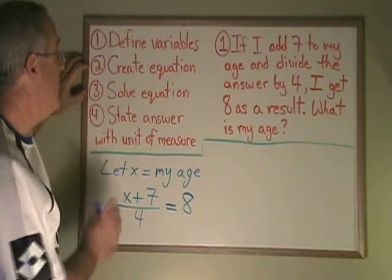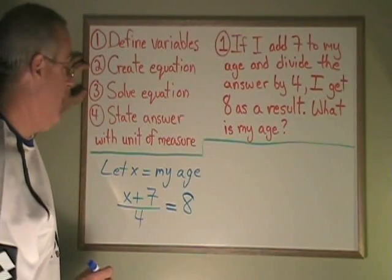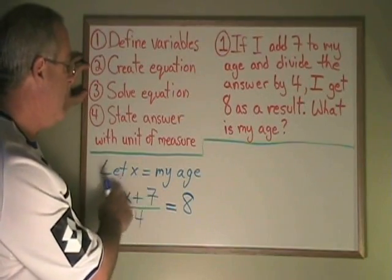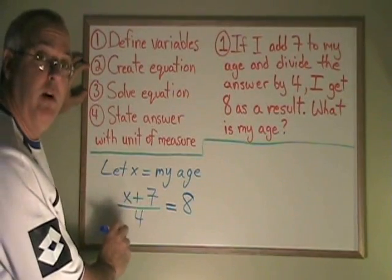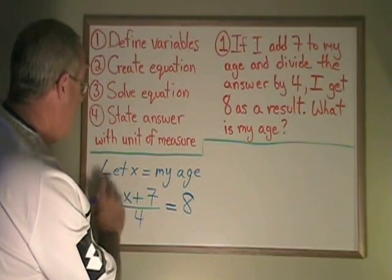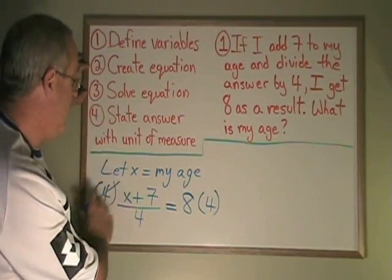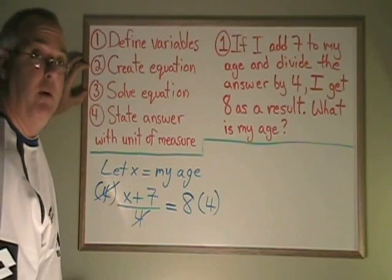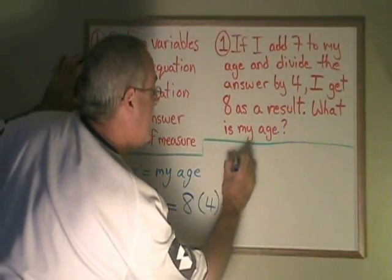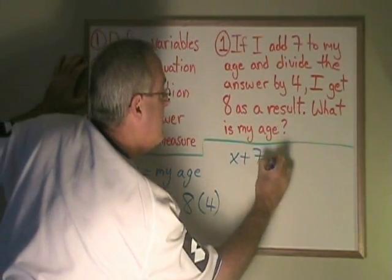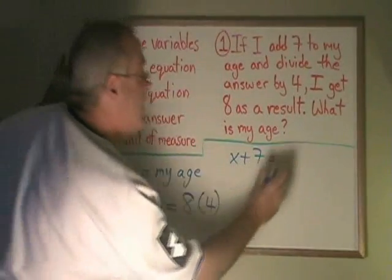Now it's time to do algebra to solve our equation. Step 3. Since my algebraic expression is being divided by 4, I multiply both sides by 4, and this allows me to cancel the 4s over here. My equation has now become x plus 7 is equal to 8 times 4, which is 32.